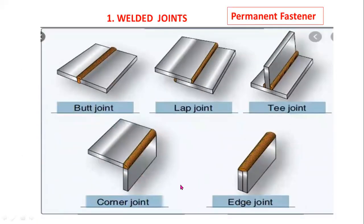This is an example of a welded joint. A welded joint is a permanent joint; we cannot separate the components without destroying the welding. The different types of welded joints are: butt joint, lap joint, T-joint, corner joint, and edge joint. These are all welding joints and are permanent fasteners.